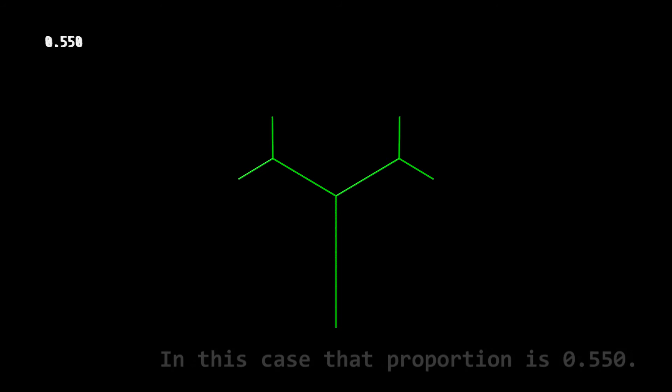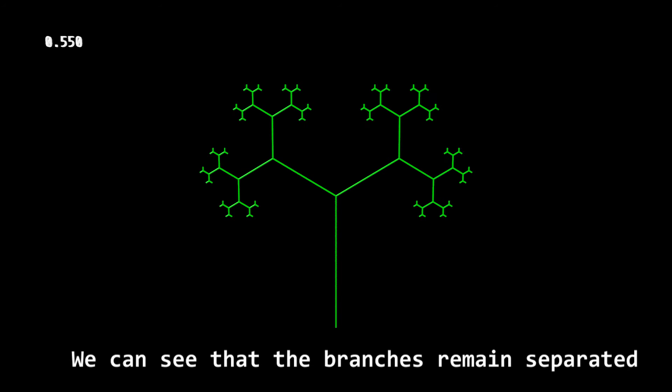But what has phi to do with fractals? When we make the fractal grow, we use a proportion that is smaller than 1 to obtain the next level. In this case, that proportion is 0.55. We can see the branches remain separated.